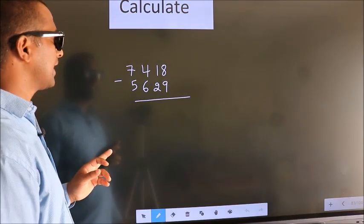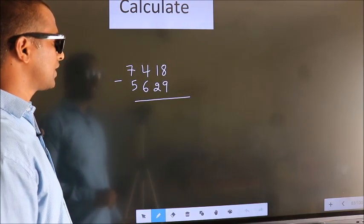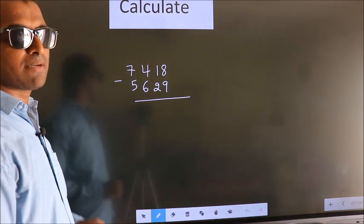Calculate 7418 minus 5629. How do we subtract faster?